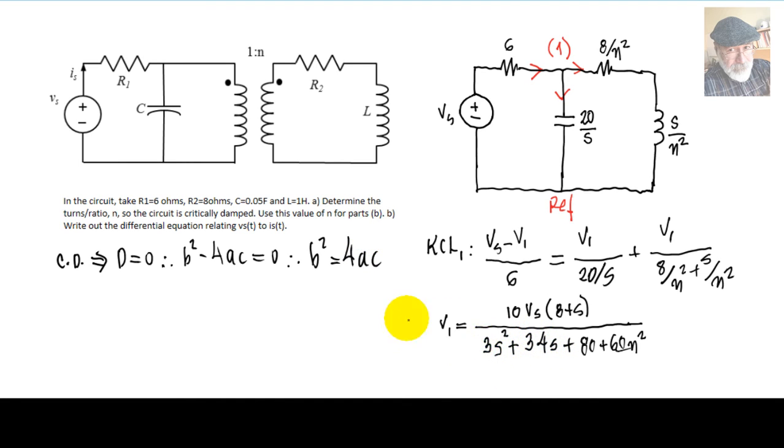And C, this constant over here, 80 plus 60 N square. Let's write that equation.